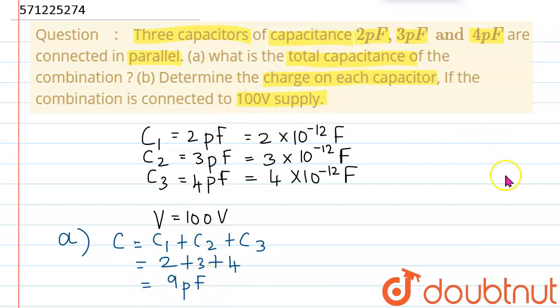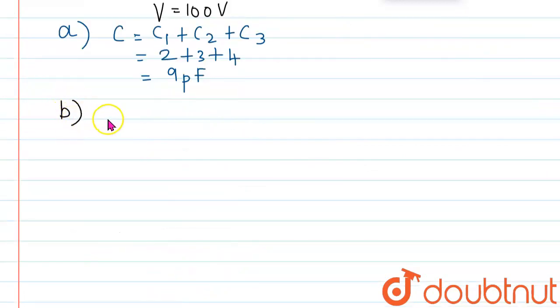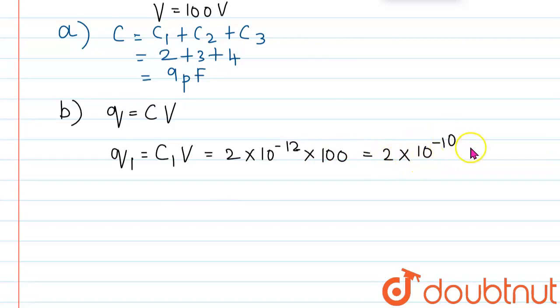This is the answer for A question and B question we are given, charge on each capacitor we need to determine. In B question, we need to find the charge. Charge formula Q is equal to CV. So, now let's find the charge on capacitor 1. Let's say it as Q1 equal to C1V, which is equal to C1 value is 2 into 10 power minus 12 into V value is given as 100 volts. Solving this, we get the value of Q1 is equal to 2 into 10 power minus 10 coulomb.